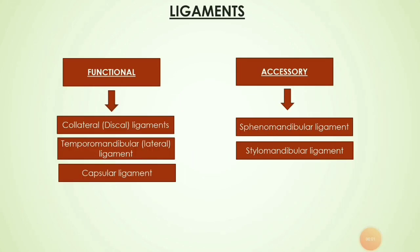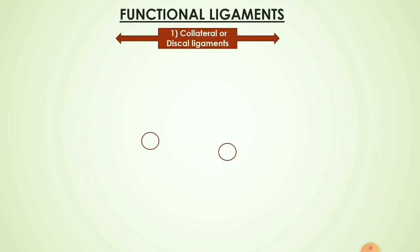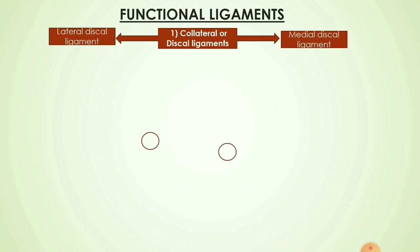The temporomandibular joint has two types of ligaments: functional ligaments and accessory ligaments. Functional ligaments are of three types: collateral ligaments (or discal ligaments), the temporomandibular or lateral ligament, and the capsular ligament. Accessory ligaments are of two types: the sphenomandibular ligament and the stylomandibular ligament. The collateral (discal) ligaments are of two types: lateral discal ligament and medial discal ligament.